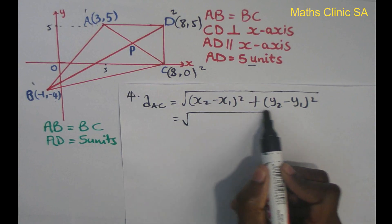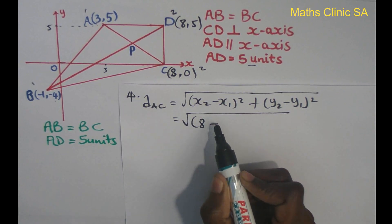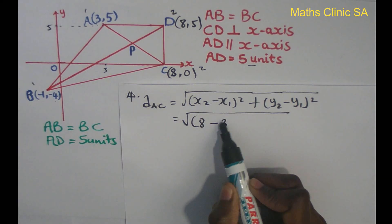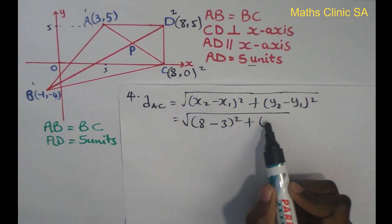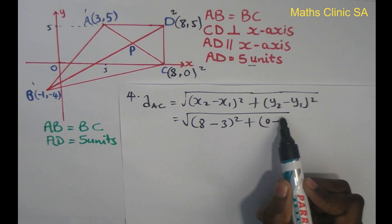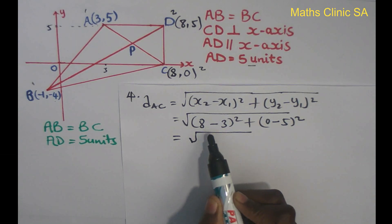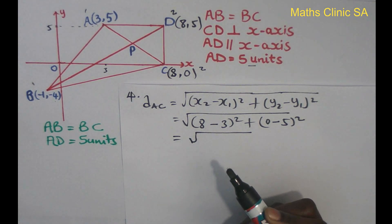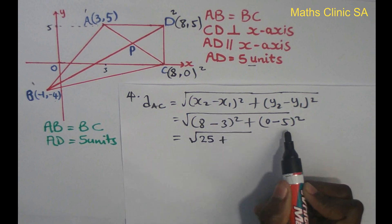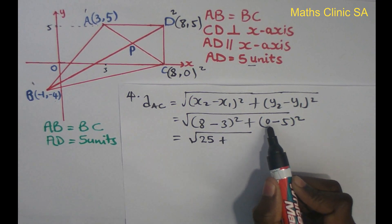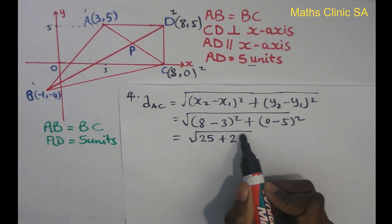I am going to substitute into the formula. x2 equals 8, x1 equals 3, so 8 minus 3. The value of y2 equals 0 and y1 equals 5, so 0 minus 5 equals negative 5. Negative 5 squared equals 25, and 5 squared equals 25. So we have 25 plus 25.